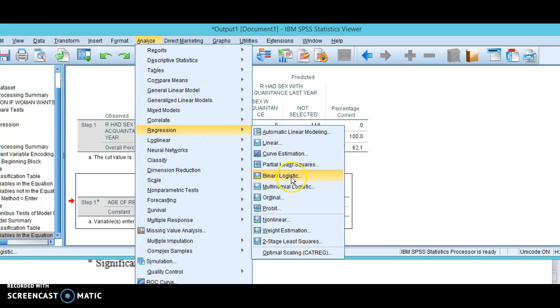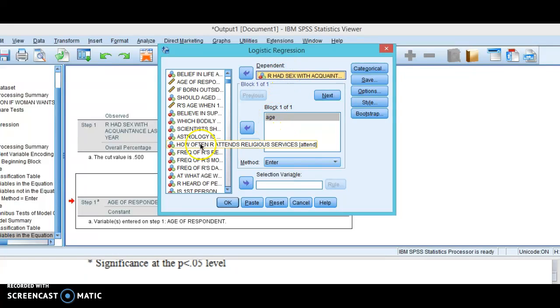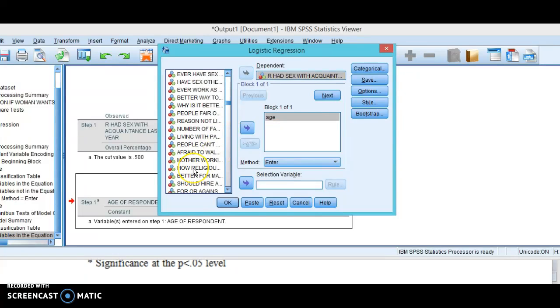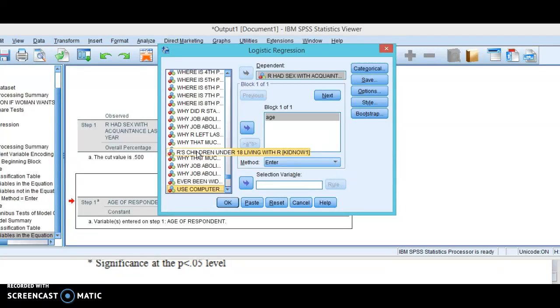If I go to regression, binary logistic, it's going to keep the same stuff I had in here before. Now I'm going to put another variable in here—use computer at work. So we put those in there and click OK.